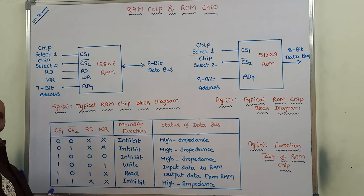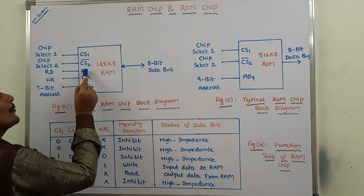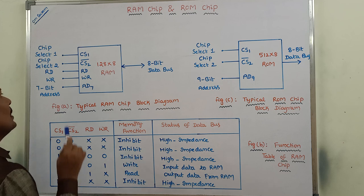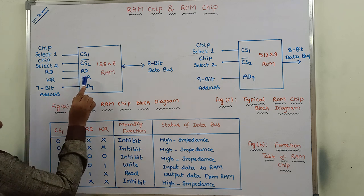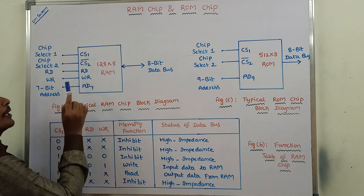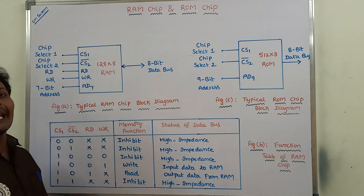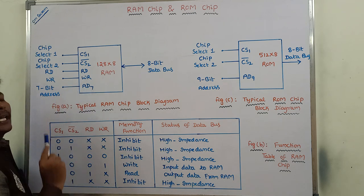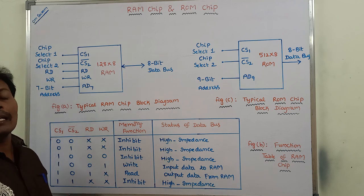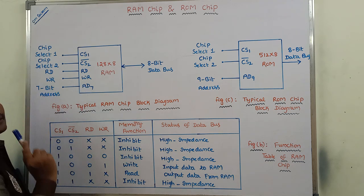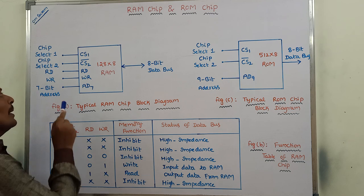RD stands for read input, used for performing the read operation. WR stands for write input, used for performing the write operation. AD7 is nothing but 7-bit address lines.